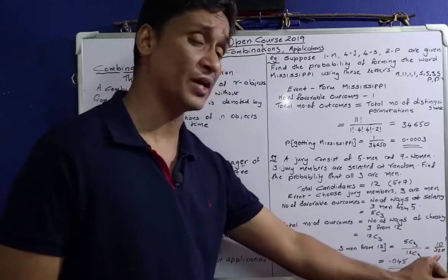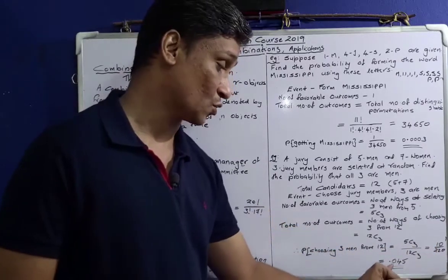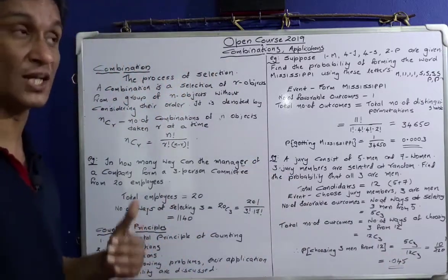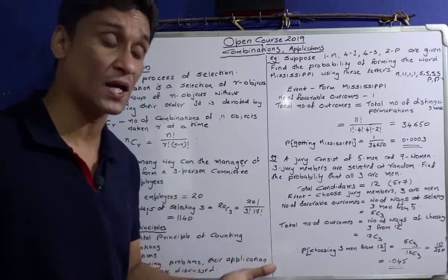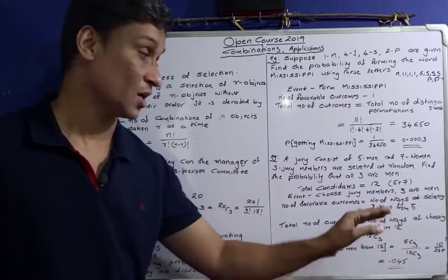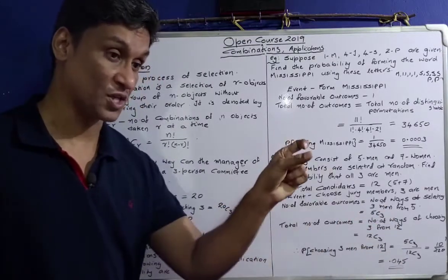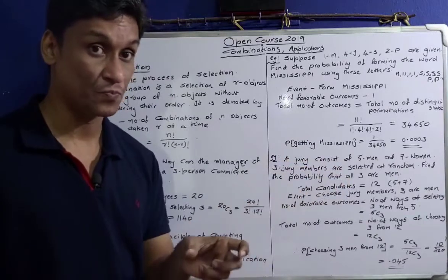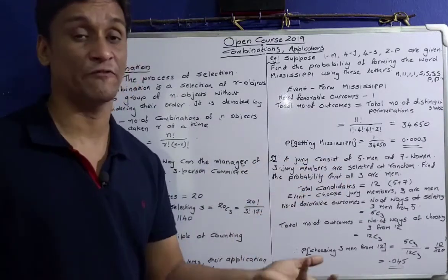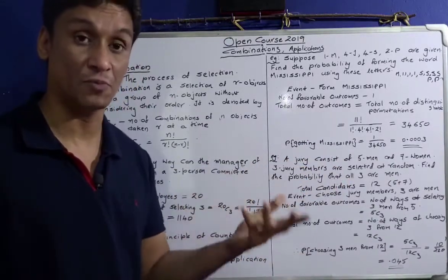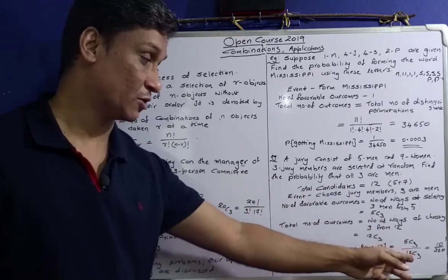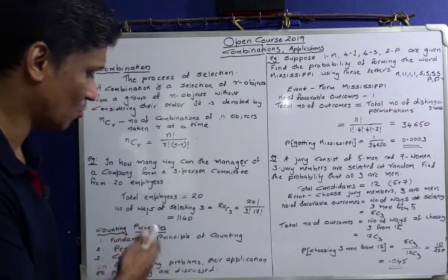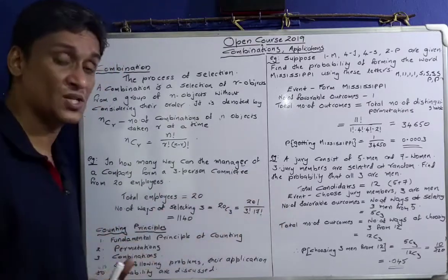That is 10 divided by 220, which equals 0.045. The probability of choosing a 3-member jury in which all 3 are men is 0.045. The method: total number of ways of choosing 3 men from 5 divided by total number of ways of choosing 3 from 12 — that is 5C3 divided by 12C3 = 0.045.